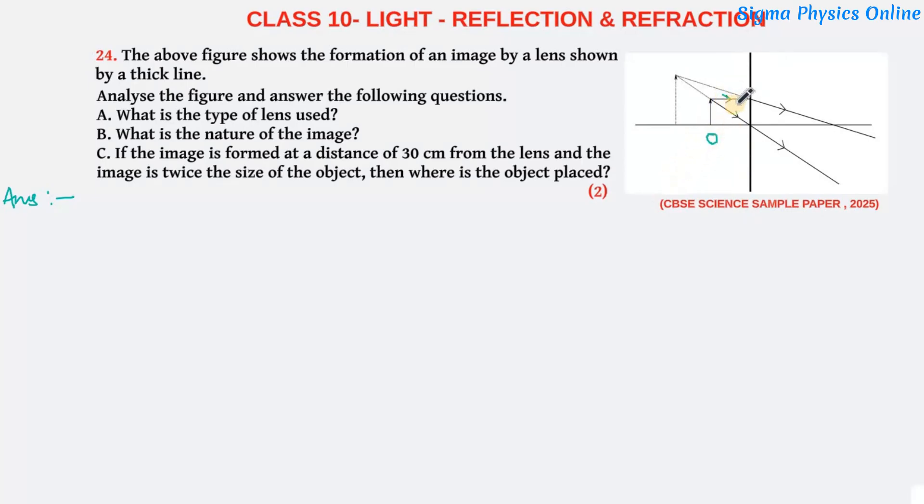Now one ray goes parallel to the principal axis; after refraction it passes through this way. Another ray passes through the optical center undeviated. These rays diverge after refraction; these rays have to be retraced backwards, and this is the point where the rays meet, and here is our image which is formed.